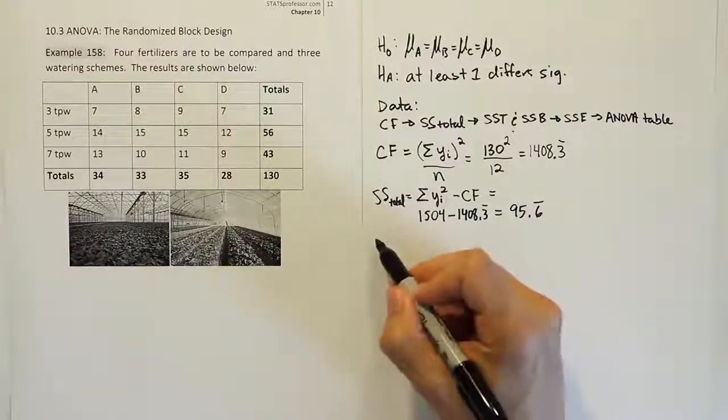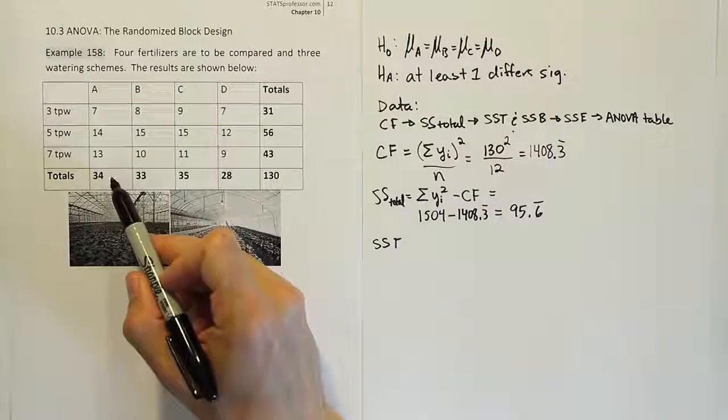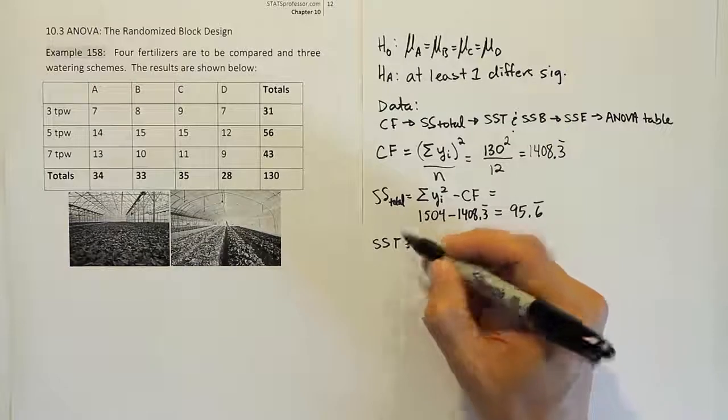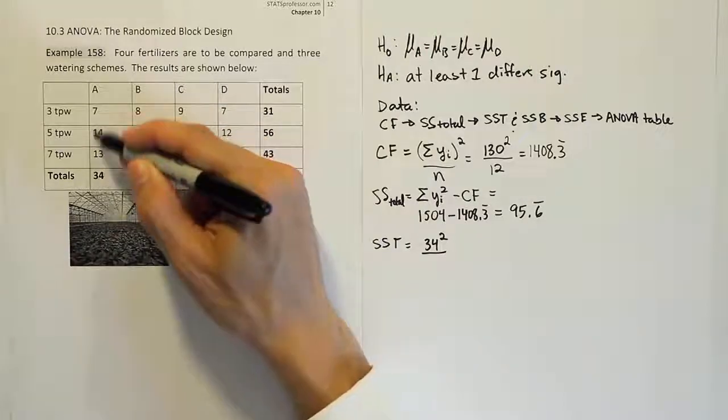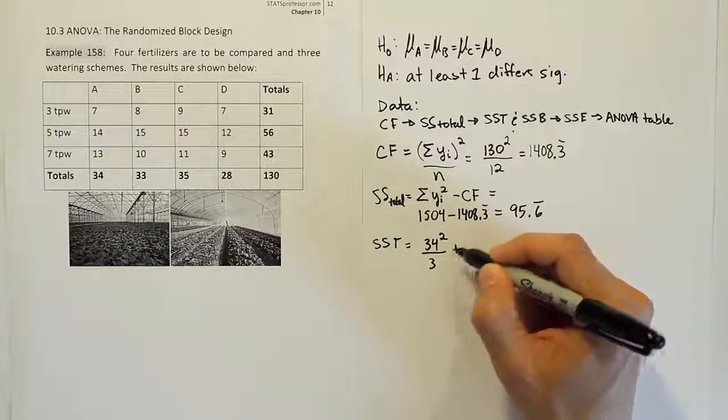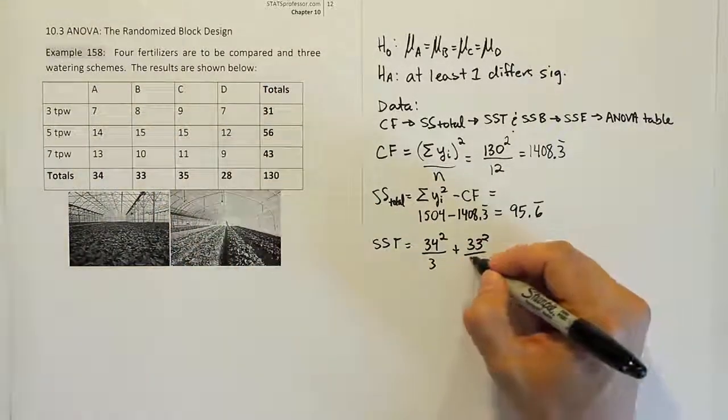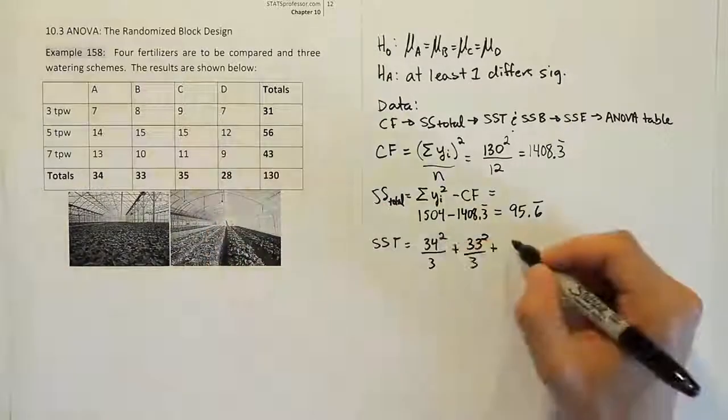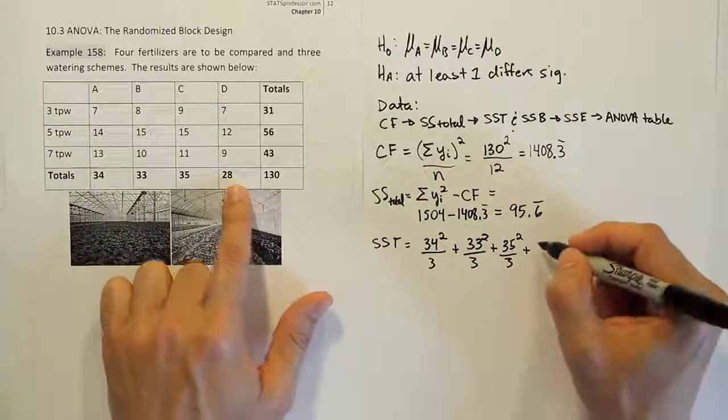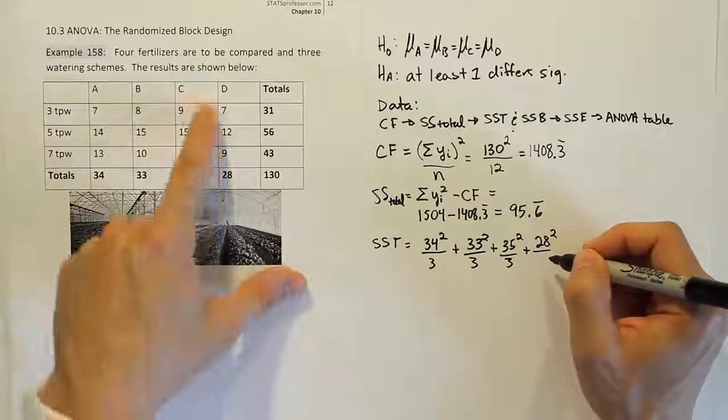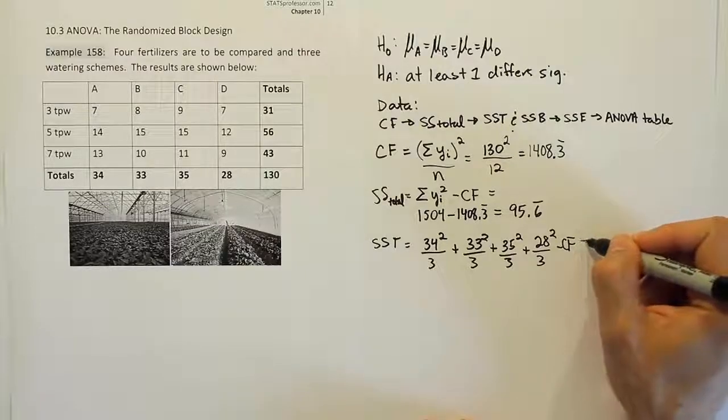Okay, so we have those two numbers. Now we go for SST. The SST is not too bad to do. Remember, it's a set of fractions that we're going to have. And when we do those fractions, we're going to basically take the total for each of the treatments. So in this case, it'll be 34 squared. We're going to square the total, and we'll divide by the number of values in that column, which is 3 here. Plus 33 squared, divided by the three values in that column. Plus 35 squared, divided by 3, plus, last one here, 28 squared, divided by 3. And then minus the correction factor. Minus the CF, the correction factor.